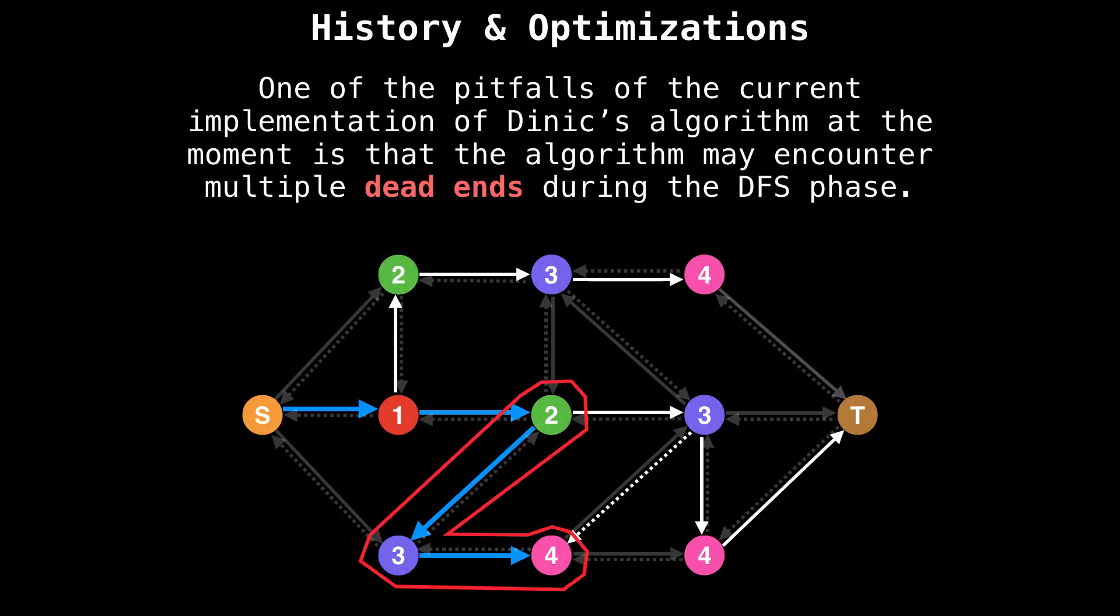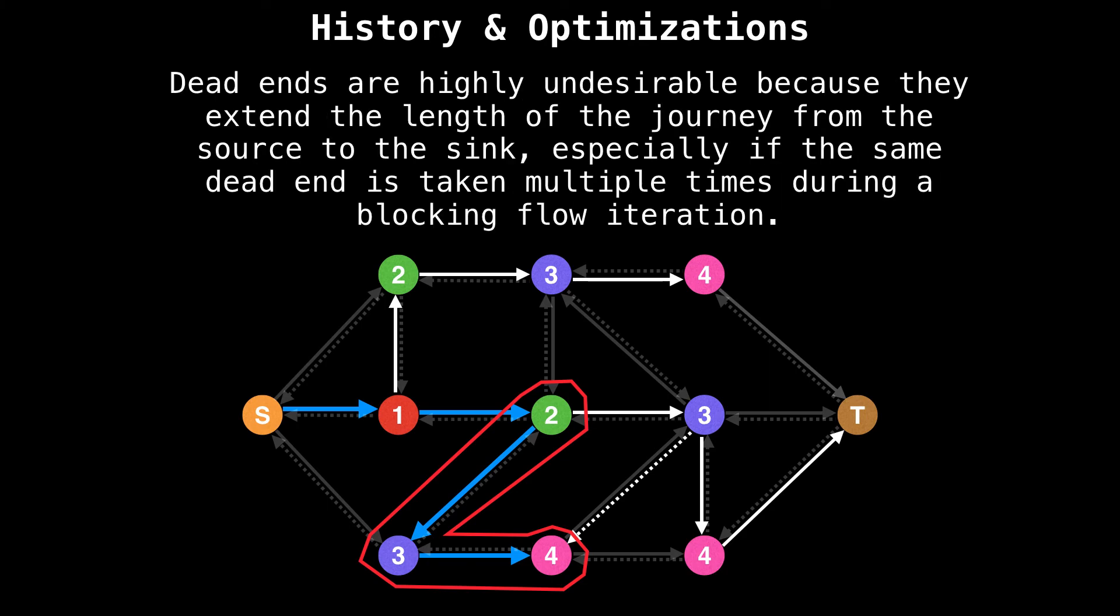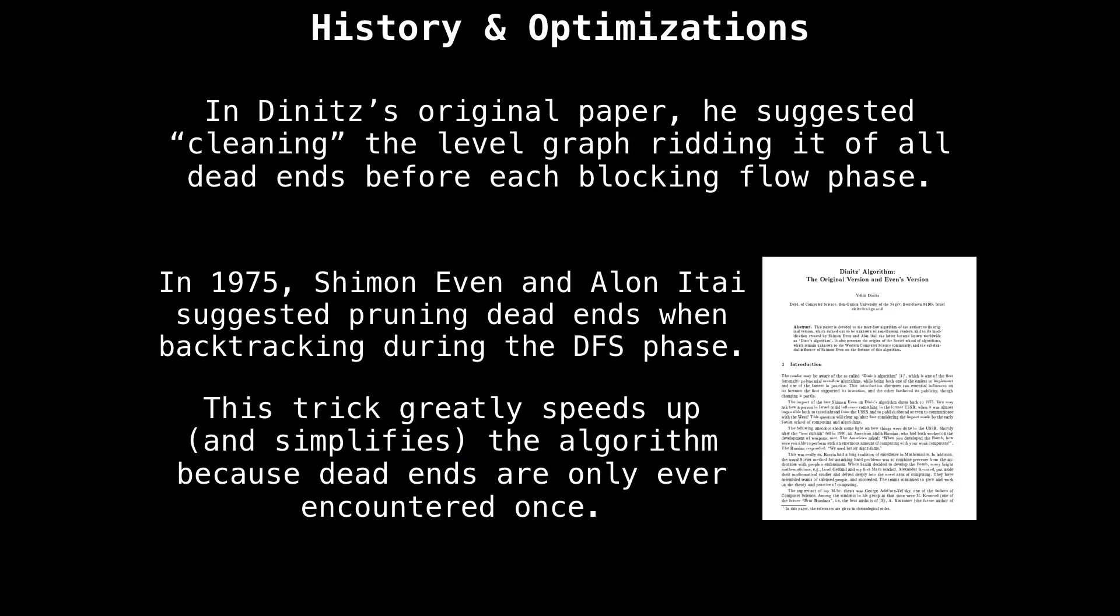However, one of the pitfalls of the current implementation of Dinic's algorithm at the moment is that it may encounter multiple dead ends during a depth first search phase. This is especially bad if the same dead end is taken multiple times during a blocking flow iteration.